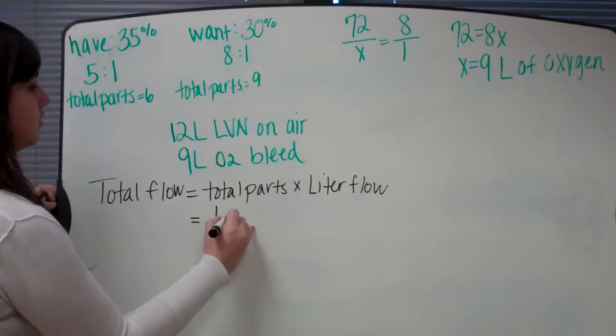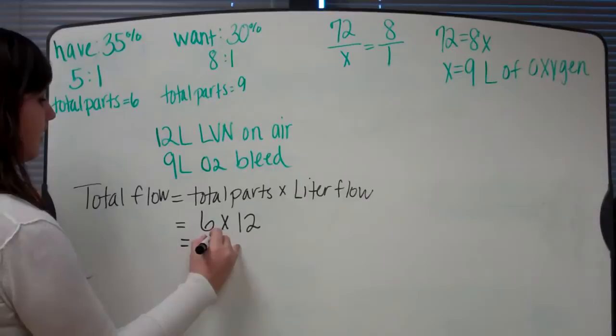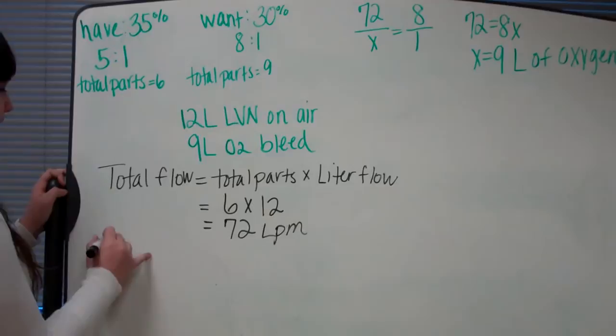So 6 times 12 liters, which is what the 35% is on, equals 72. So our 72 is our total flow, liters per minute, for our 12 liter LVN on air.